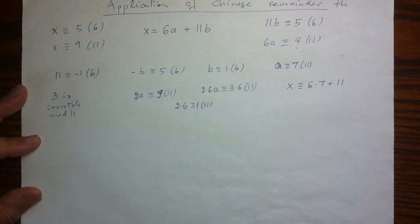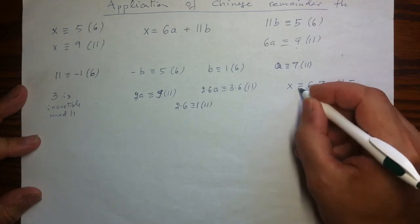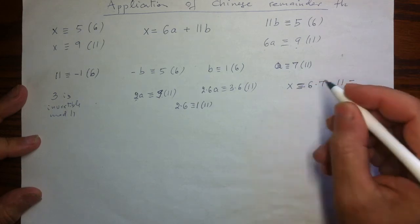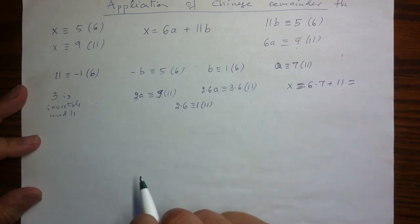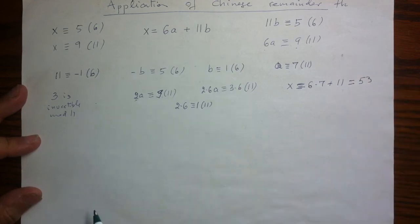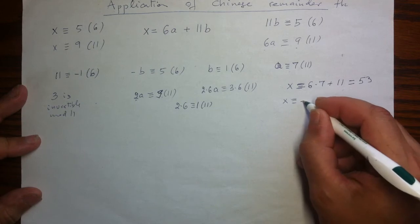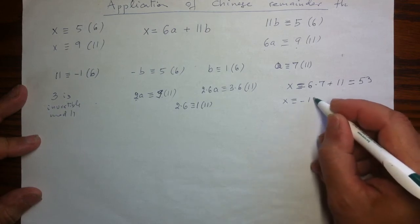So 6 times 7 is 42. And with 11, well, here I can just write equal because I'm looking at this stage for just an integer solution. So that is going to be 53. And modulo 66, where my answer is going to be unique, it is also negative 13.